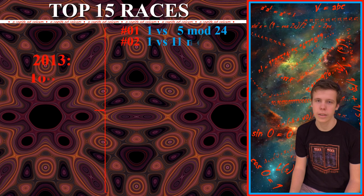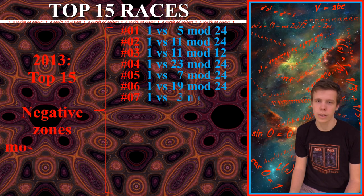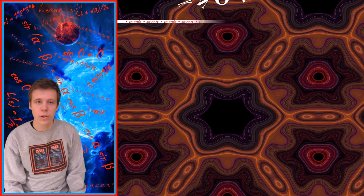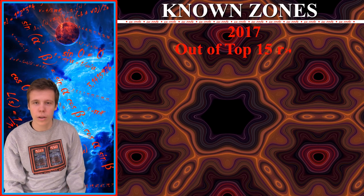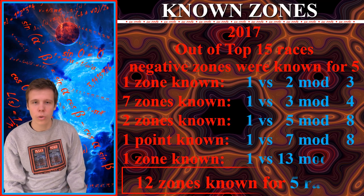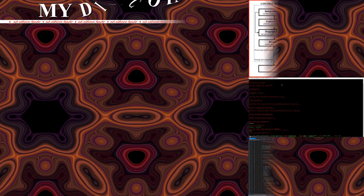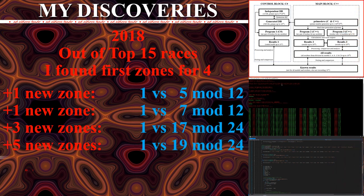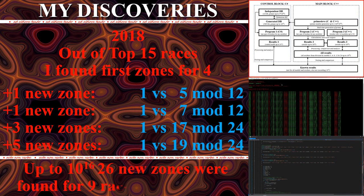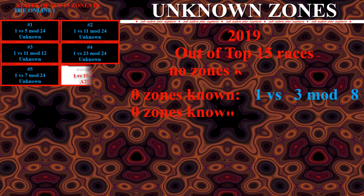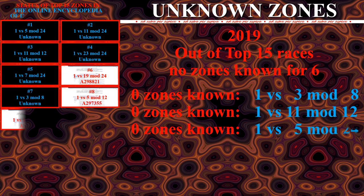The top 15 races were established theoretically only in 2013, and negative zones for them are the most difficult to find. Up until recently, out of the top 15 races, negative zones were known for only 5. In 2018, I wrote a computer program that checked all prime numbers up to 10 to the power of 16, and found 4 first-ever negative zones for 4 races out of the top 15. There are still 6 races where no negative zones are known. These zones need to be found to support the validity of the generalized Riemann hypothesis.